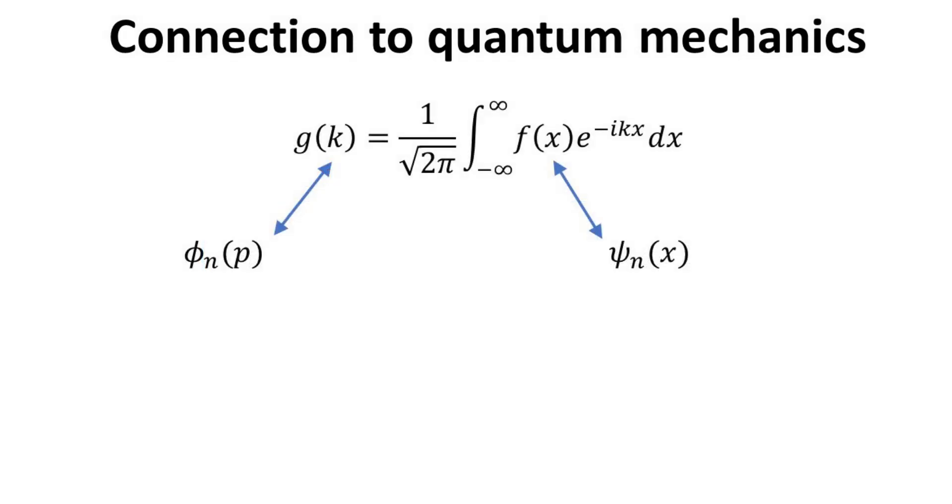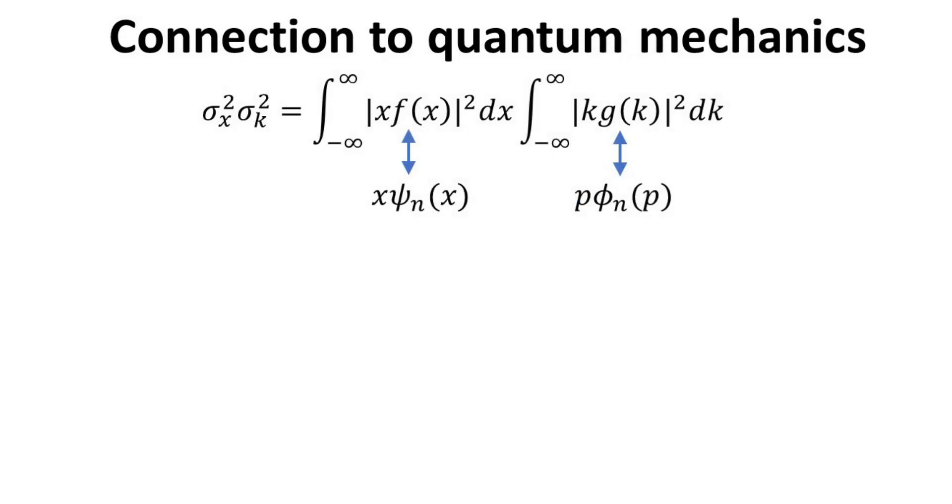As we alluded to previously, the functions g of k and f of x are analogous to the quantum wave functions in the momentum and position representations. These wave functions φ of p and ψ of x are related through the Fourier transformation, where the momentum p is equal to h-bar multiplied by wavenumber k, namely the de Broglie relation.